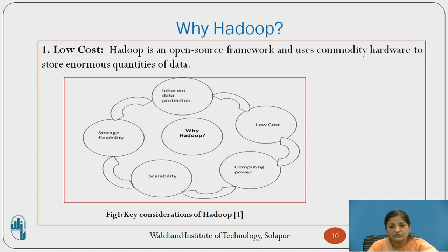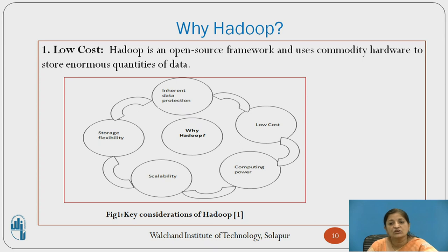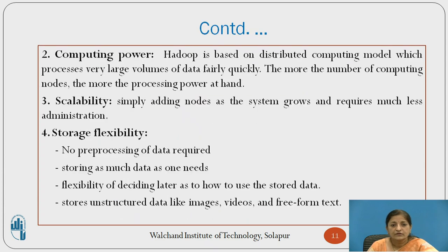Why has Hadoop become popular? There are various factors. The first factor is low cost. Hadoop is an open source framework that uses commodity hardware to store and process huge quantities of data, making it cheaper. The second factor is computing power. Hadoop is based on a distributed computing model, using multiple nodes' processing power to process a huge data set. The more the number of computing nodes, the more processing power is available.